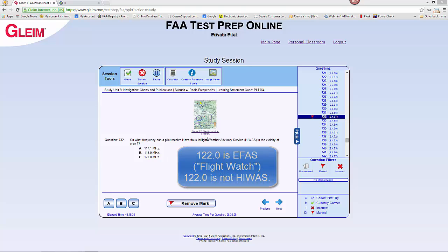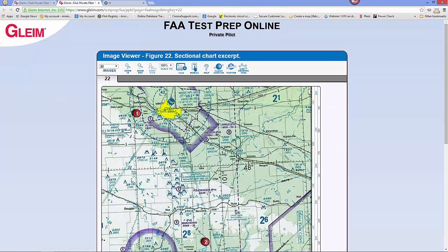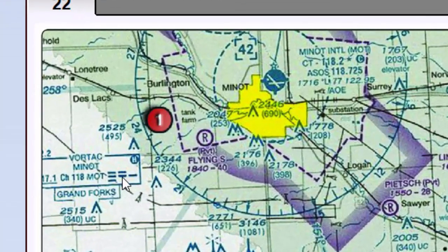So let's look at the chart. In the vicinity of Area 1, we see we have a VOR, and this little H indicates that this VOR carries the HIWAS transmission, and the frequency would be 117.1.